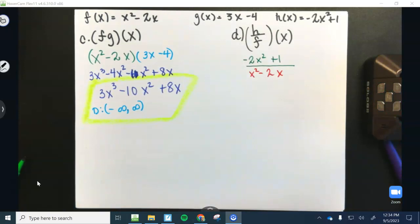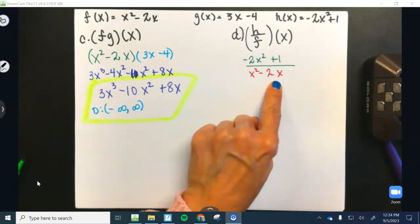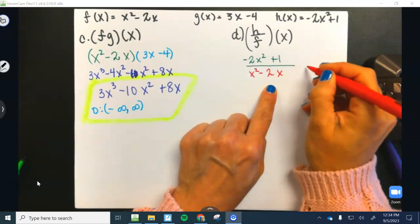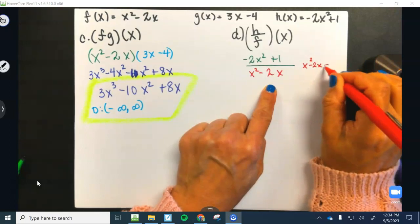Okay, so again, one more time. Bless you. What can this not equal? All right, y'all, we have to solve. We have to figure out what this cannot equal. So I'm going to write x squared minus 2x cannot equal 0.